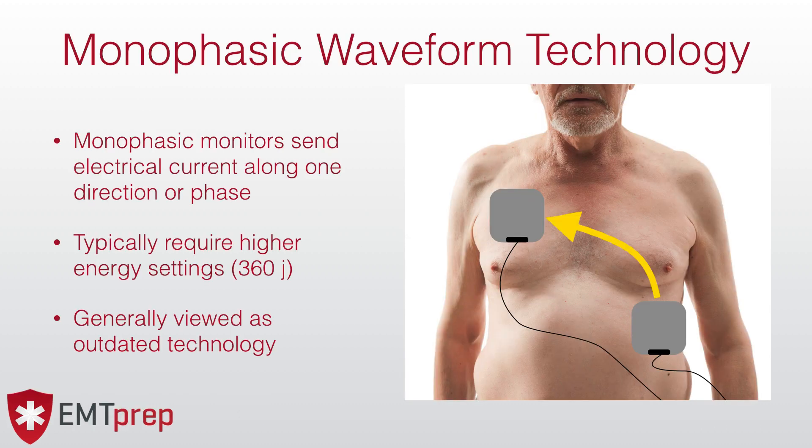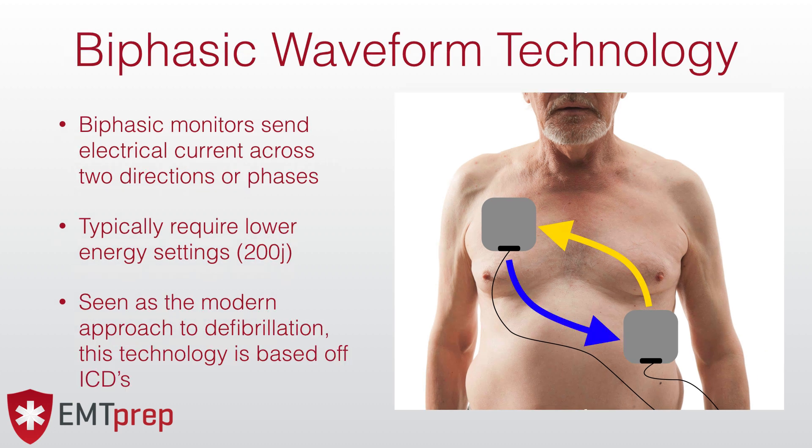Let's talk about monophasic waveform technology first. A monophasic monitor sends electrical current along one direction, otherwise known as a phase. With a monophasic monitor, you'll see protocols that require higher energy settings, so it's not uncommon to see defibrillation doses of 360 joules. Generally speaking, monophasic monitors are viewed as outdated technology.